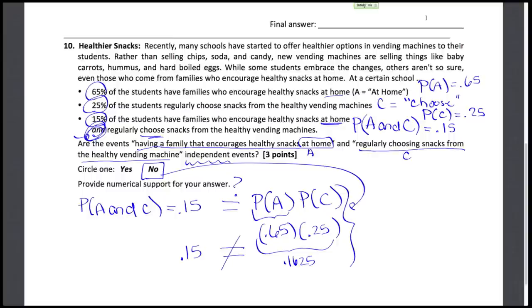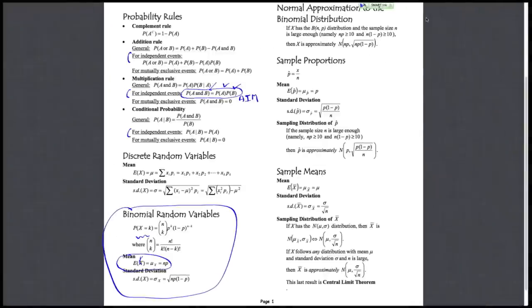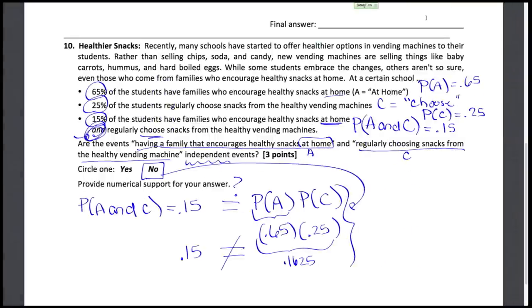Now there's certainly other ways you could check for independence. You could have used any one of these other two definitions, say even this conditional one here, which would have required you to find that conditional probability first and see if it ends up being just the one probability of event A alone. But that would have been a little bit more work to do, but possible. So there's more than one set of responses here that would give you the right support. You just have to show the work accordingly.